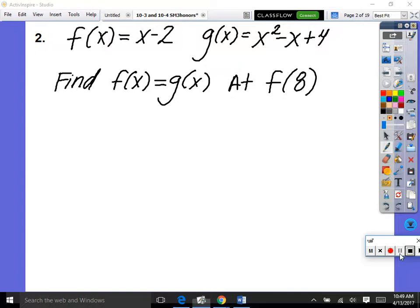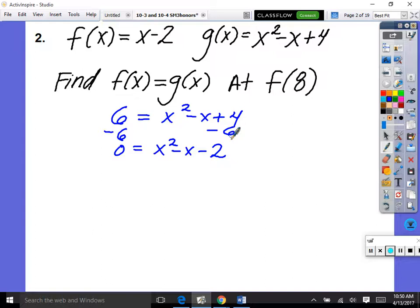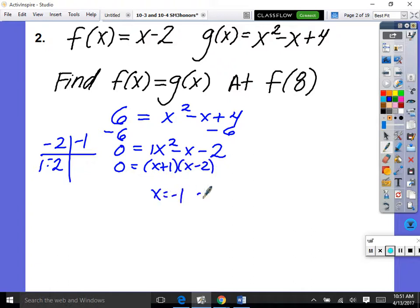Next one. So do this one. Given f of x is that, g of x is that, find f equals g of x at f of 8. So you would plug it in, correct? So f of x at 8 is 6, correct? So then this becomes 6 is equal to x squared minus x plus 4. Then how would we solve it? Good. Get it equal to 0. So we have x squared minus x minus 2, correct? And then you would solve it by factoring. What multiplies to be negative 2 and adds to be negative 1? 1 times 2, negative 2. So it quick factors because our leading coefficient is 1. So x plus 1, x minus 2. So x is equal to negative 1 and x is equal to 2.